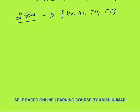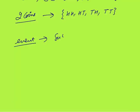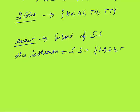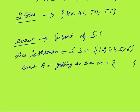Now, what is the meaning of event? An event is a subset — a part of the sample space. For example, a dice is thrown. The sample space is {1, 2, 3, 4, 5, 6}. Event A is getting an even number. The favorable cases are 2, 4, and 6. This subset {2, 4, 6} is part of the sample space, so event A is a subset of the sample space.